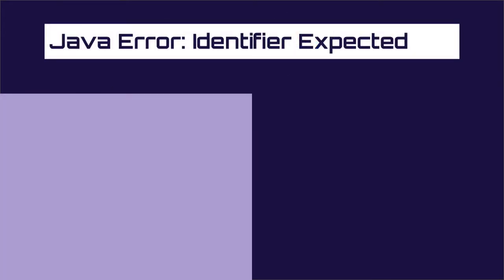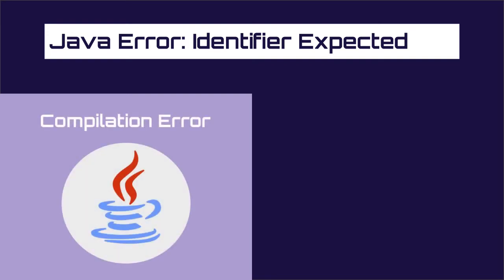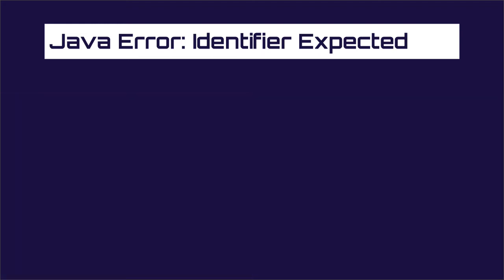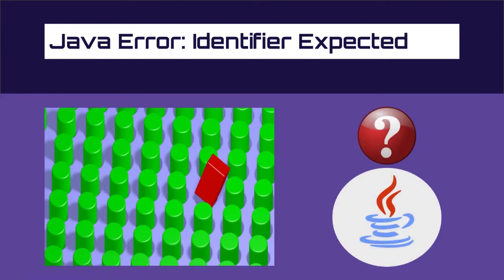Let's start by explaining what the identifier expected message means. This error is a compilation error. A compilation error means that the code doesn't comply with the syntax rules of the Java language. For instance, one of the syntax rules in Java dictates that there should be a semicolon at the end of every statement. Missing this semicolon will cause a compilation error. The identifier expected is a compilation error indicating that you wrote some code where Java doesn't expect it.